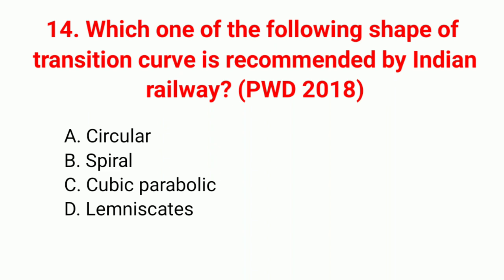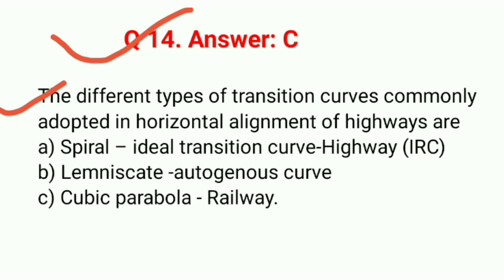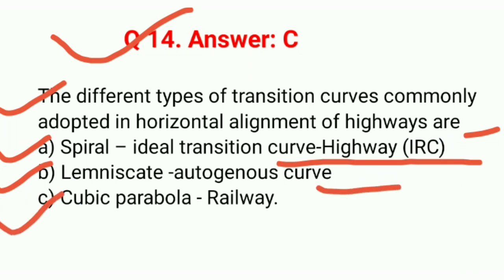Question 14: Which shape of transition curve is recommended by Indian Railways? Correct answer option C: cubic parabola. The different types of transition curves commonly adopted in horizontal alignment of highways are: spiral (ideal transition curve, used by IRC), lemniscate (Euler's curve), and cubic parabola (used for railways).